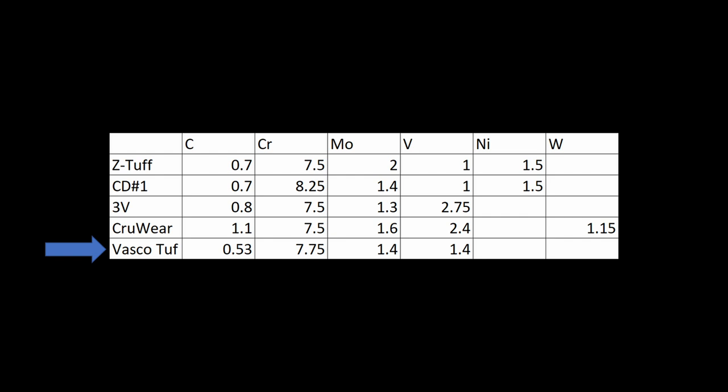I mean, they both have Tuff in the name, but Z-Tuff is a little bit different. It's got a little bit higher carbon, a little bit lower vanadium. For some reason, Z-Tuff has a little bit higher moly than CD#1, while CD#1 has a little bit higher chromium. I don't know how much difference that can really make. They're functionally the same steel. But the vanadium was reduced, and the carbon increase would give it a little bit different properties. The reduced vanadium might give it a little higher toughness. The higher carbon gives it a little higher hardness.